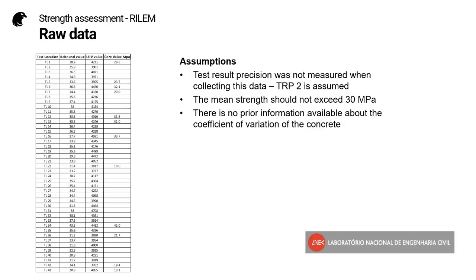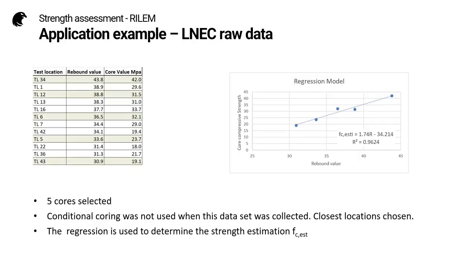I'm going to apply this method to the raw data we've been using throughout this series, but we have to make some assumptions as this RILEM method was not used when collecting this data. There's no information about the test result precision, and I've assumed a TRP2 for this. I've also assumed the mean strength should not exceed 30 MPa, and that we have no information about the coefficient of variation of the concrete. As we saw from the tables, I need five cores, and I've chosen them using conditional coring as close as I can.